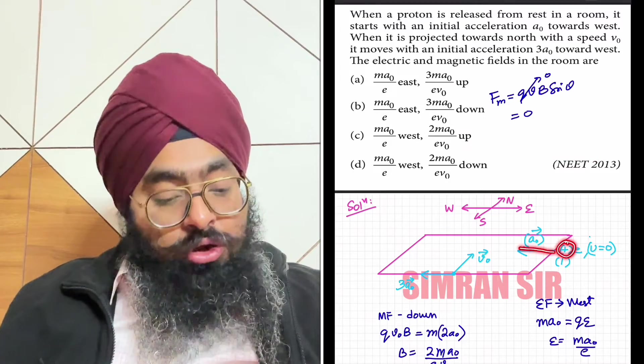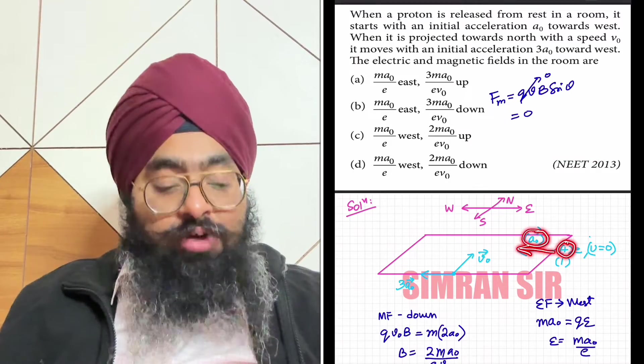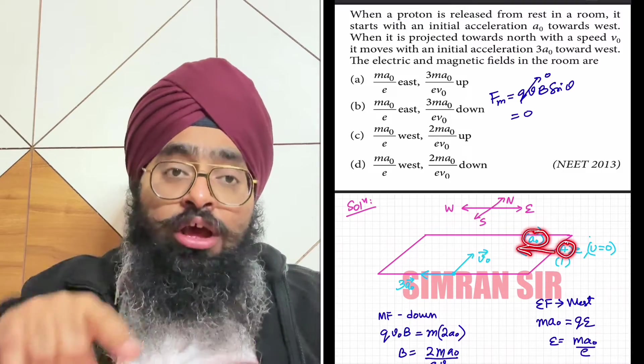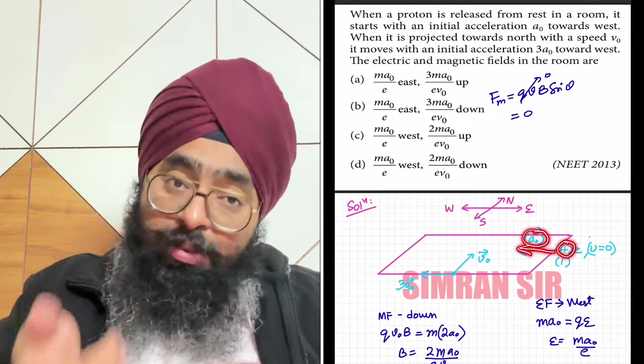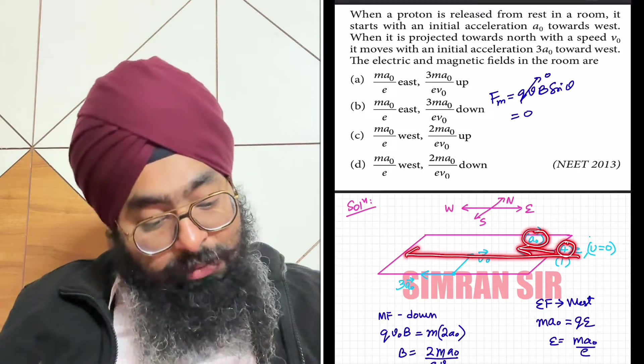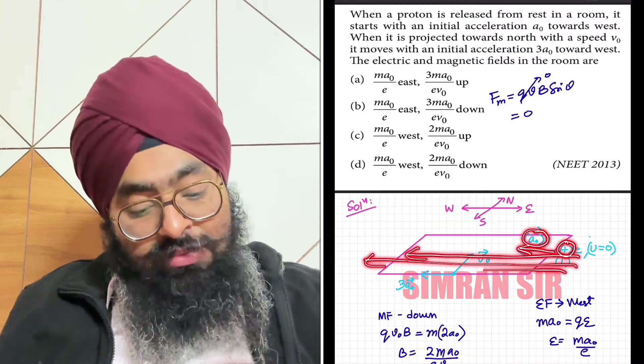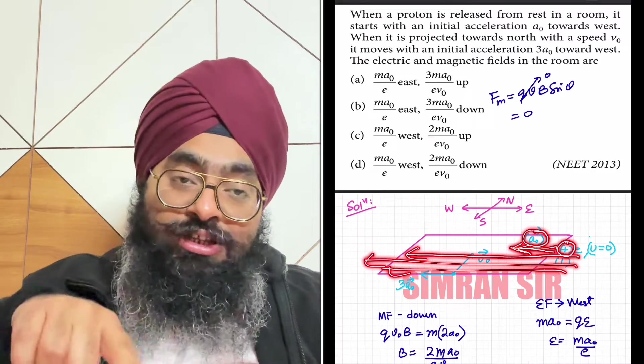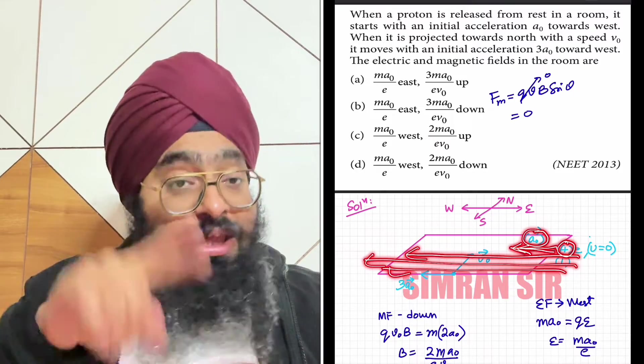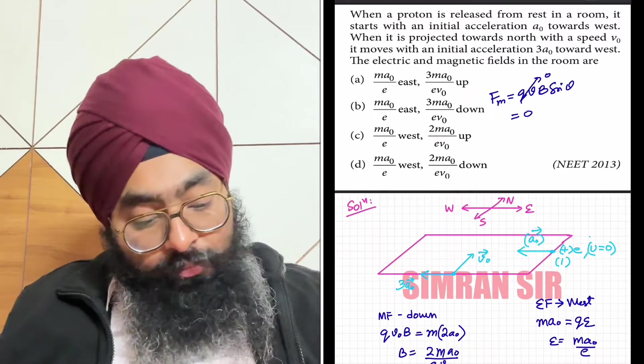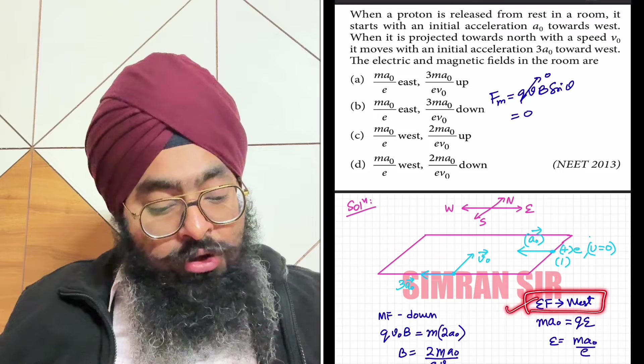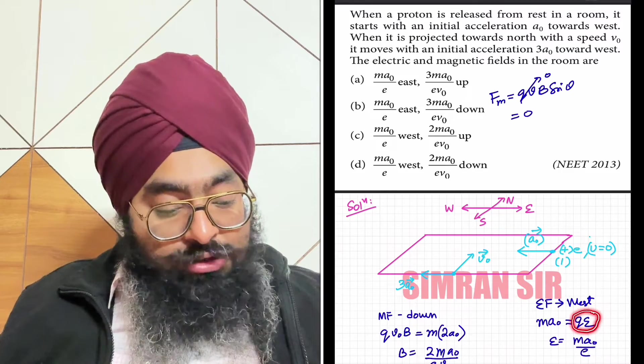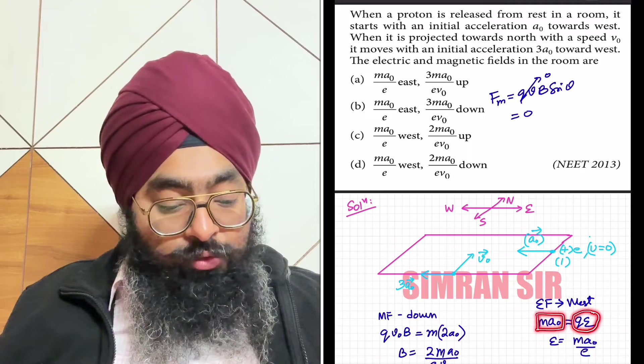This is the acceleration, which is due to the force, which is due to the electric field. For a positive charge, the electric field is also present in the same direction. The charge accelerates in that direction because acceleration and force are in the same direction. The electric field is in the west direction.